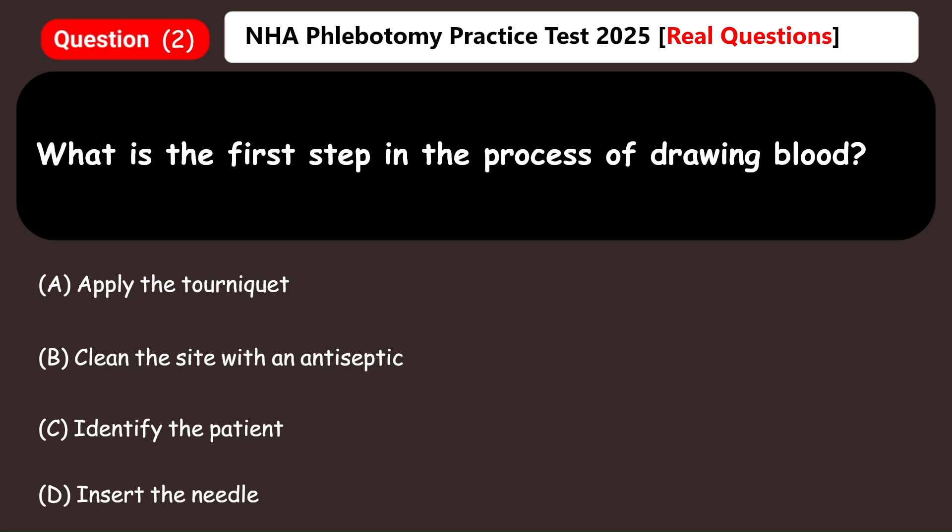What is the first step in the process of drawing blood? A) Apply the tourniquet, B) Clean the site with an antiseptic, C) Identify the patient, D) Insert the needle. Answer: C) Identify the patient.